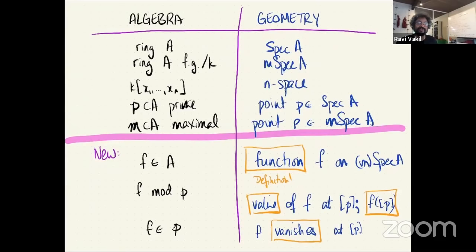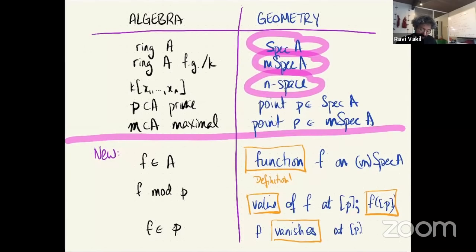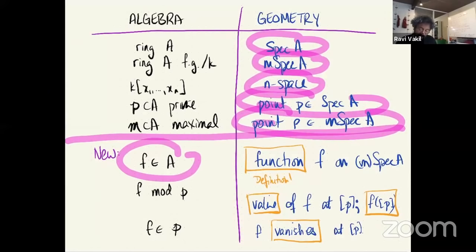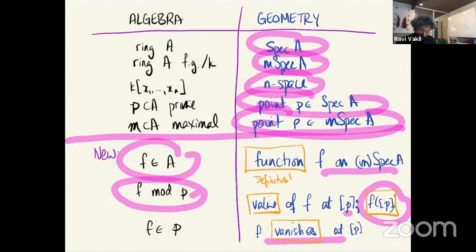Here is our algebra-geometry dictionary, which is going to get bigger and bigger. On the geometry side I've defined a bunch of things; now I'm making more definitions. Any element of the ring I'm going to call a function on Spec or m-Spec. The value of the function f at a point p is f mod that prime ideal. I say f is zero or vanishes at p if f is in that prime ideal. This is a definition — it may be confusing.